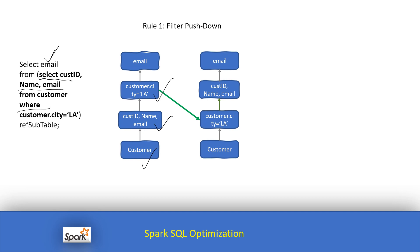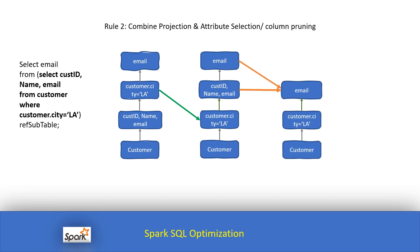Our final outcome is just the email for a particular city, which we want to use for marketing. So what is filter pushdown, or predicate pushdown? Predicate pushdown says: if you have a filter condition, push it down early. The advantage is that you select only the required records — you don't need to select all records from the customer table. We select only customers belonging to city LA, which reduces the record count and helps Spark because fewer records are in memory. This is filter pushdown or predicate pushdown.